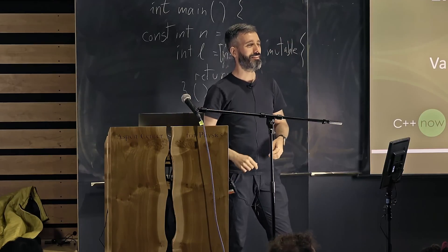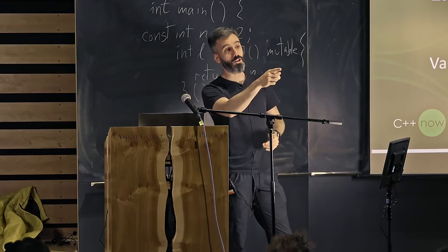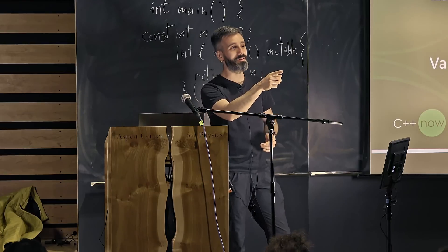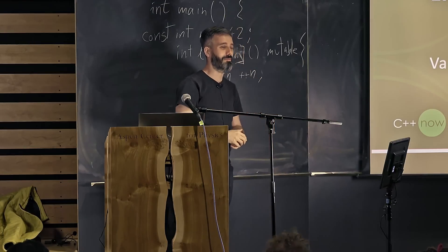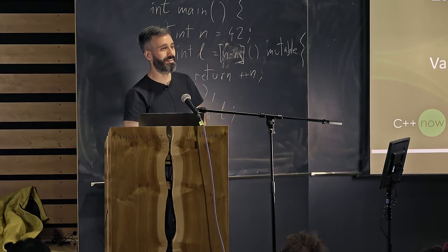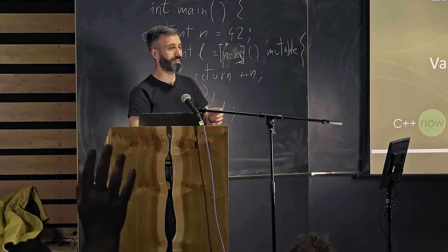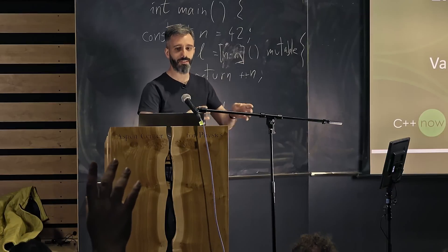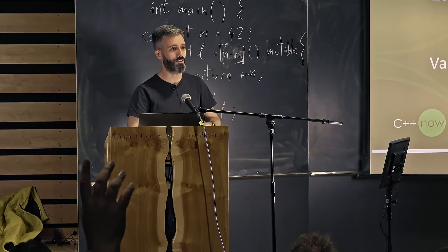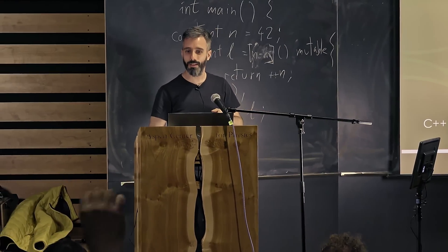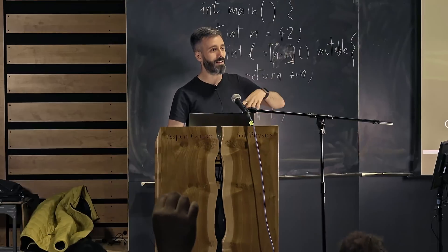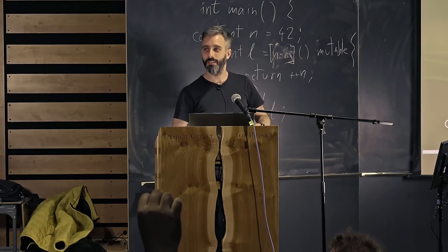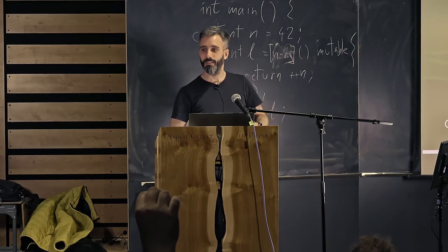Left shift integer — that one changed a few times. It changed with two's complement, then it changed back. What if I shift 33 bits? Shifting a number of bits equal to the number of bits of the size you're shifting — that's the one that was changed back and forth.